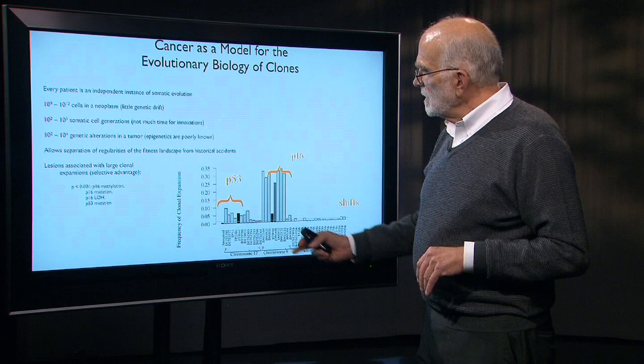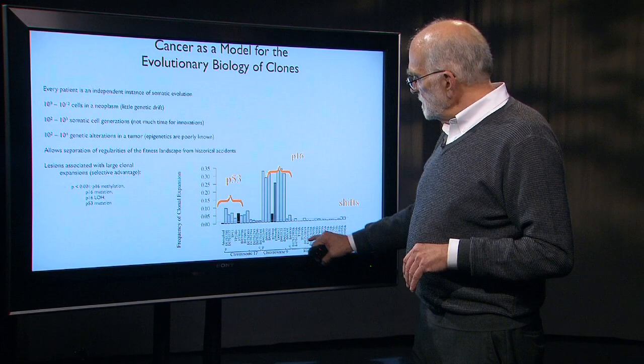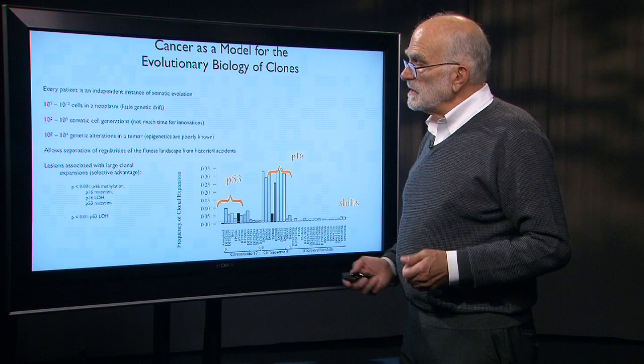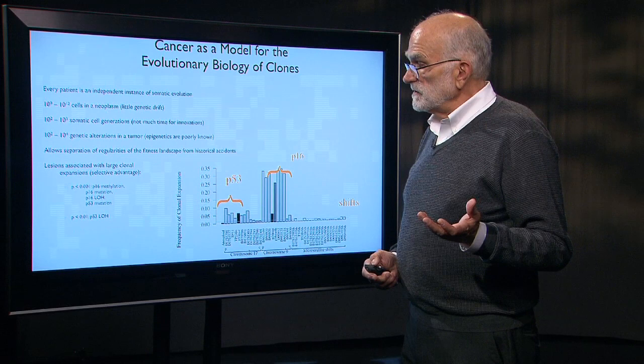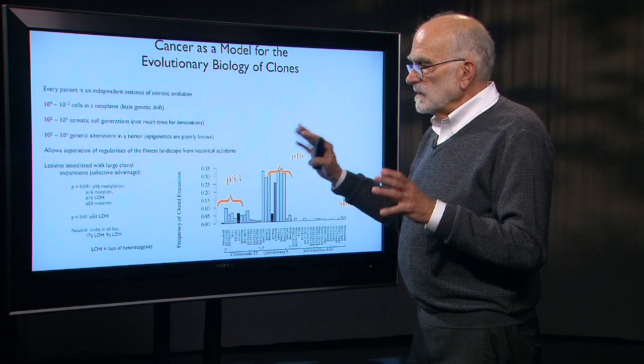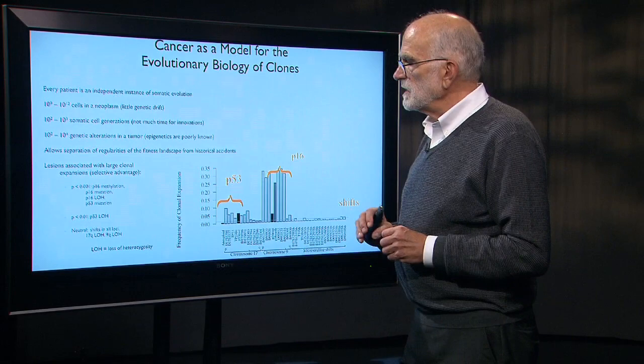P53 is on chromosome 17 and P16 is on chromosome 9, and there are microsatellite shifts going on in tumors as well. The probability for a loss of heterozygosity in a tumor where there's a P53 mutation is less than one in a hundred — so it's highly significant. There are neutral shifts in lots of loci, but two mutations are the most important — P53 and P16 — and they are associated with clonal expansions in tumors.